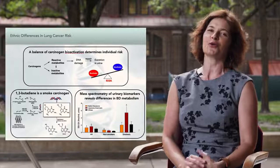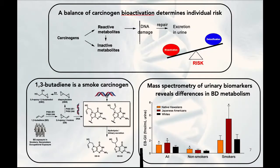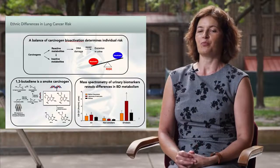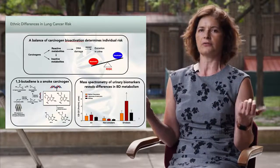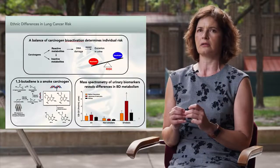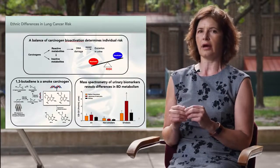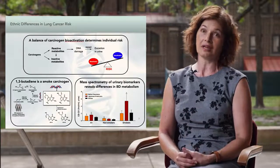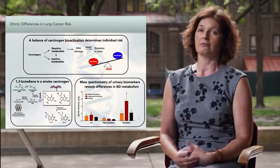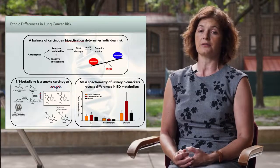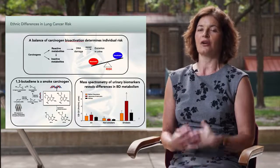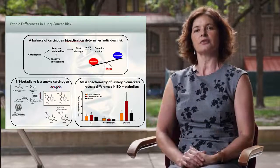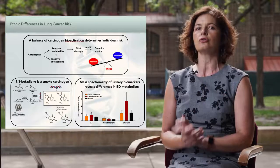In the second project, we are focusing on the origins of inter-individual differences in cancer. For example, in people who smoke, there is a large difference in lung cancer incidence between different ethnic groups. African-American smokers and native Hawaiians are at much higher risk for development of lung cancer as compared to Latino and European Americans. We hypothesize that these differences in lung cancer risk originate from genetic and epigenetic differences observed between these ethnic and racial groups.